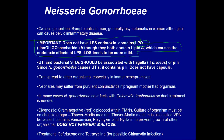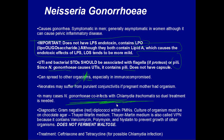Urinary tract infections and STDs should be associated with flagella or pili. When you urinate, the stream pushes bacteria down, but pili help bacteria attach and cause UTIs. Gonorrhoeae causes UTIs and STDs, so its virulence factor is pili. Neonates can get a conjunctival infection if their mother has gonorrhoeae — when the baby passes through the birth canal it can pick up Neisseria gonorrhoeae and develop conjunctivitis. Also, Neisseria gonorrhoeae very commonly co-infects with chlamydia, so when someone has gonorrhoeae you must also treat for chlamydia — it is a co-treatment.